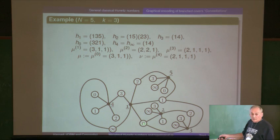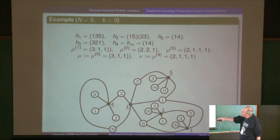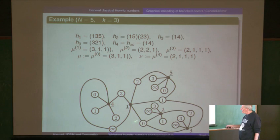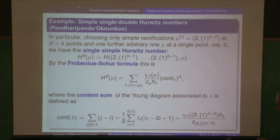Similarly for infinity: if you look at the diagram it gives you one, four — that's a single two-cycle. In all you've got five points: zero, infinity, plus three finite ones, so k is five. This diagram tells you what the group elements are. So that's a way to make a graphical representation by constellations of branched coverings.